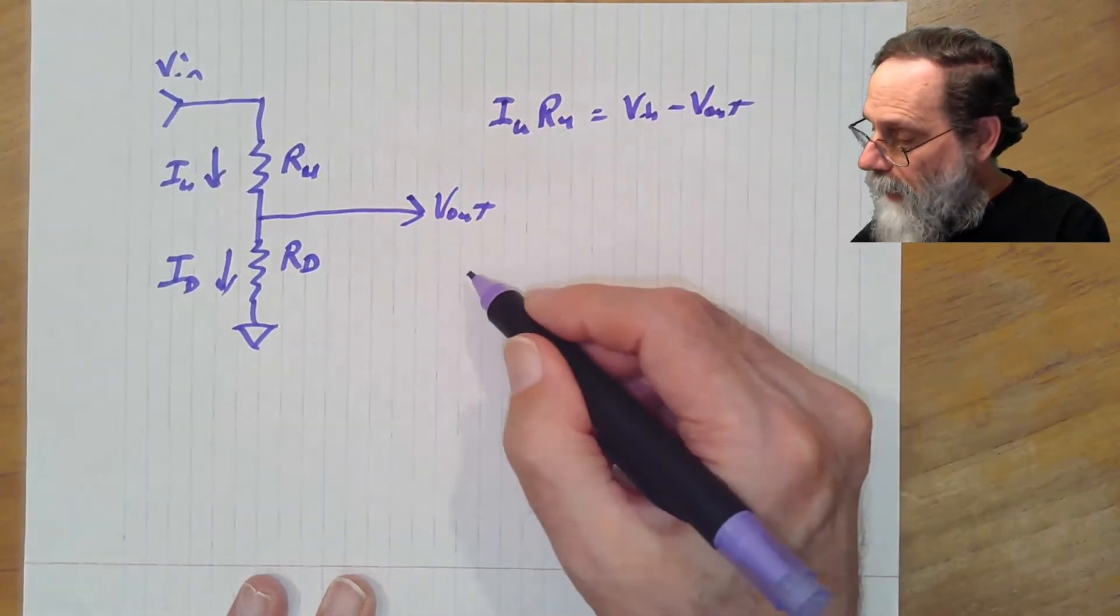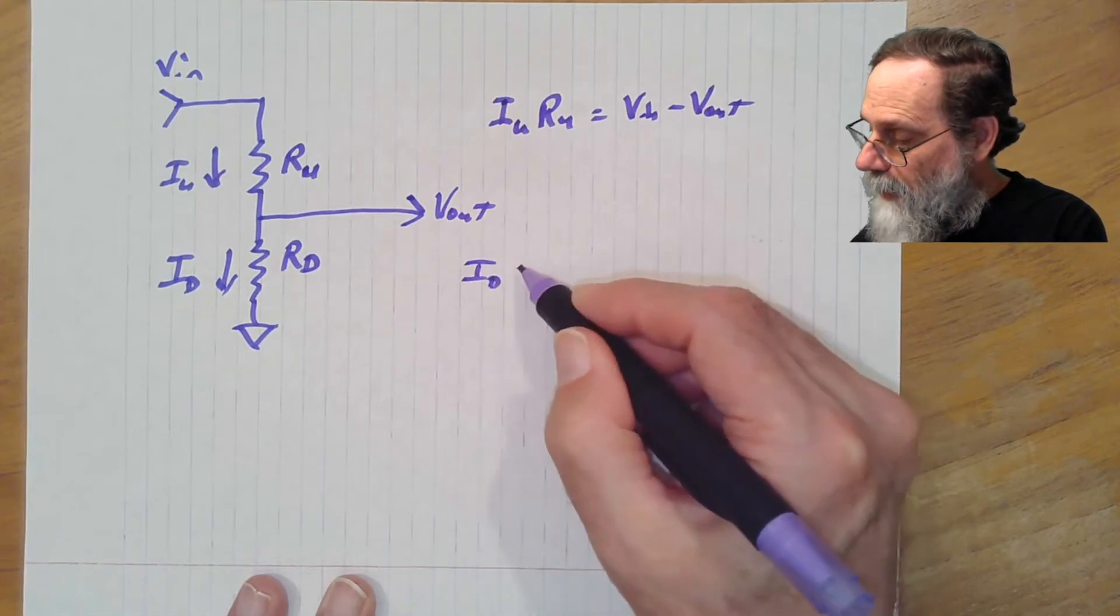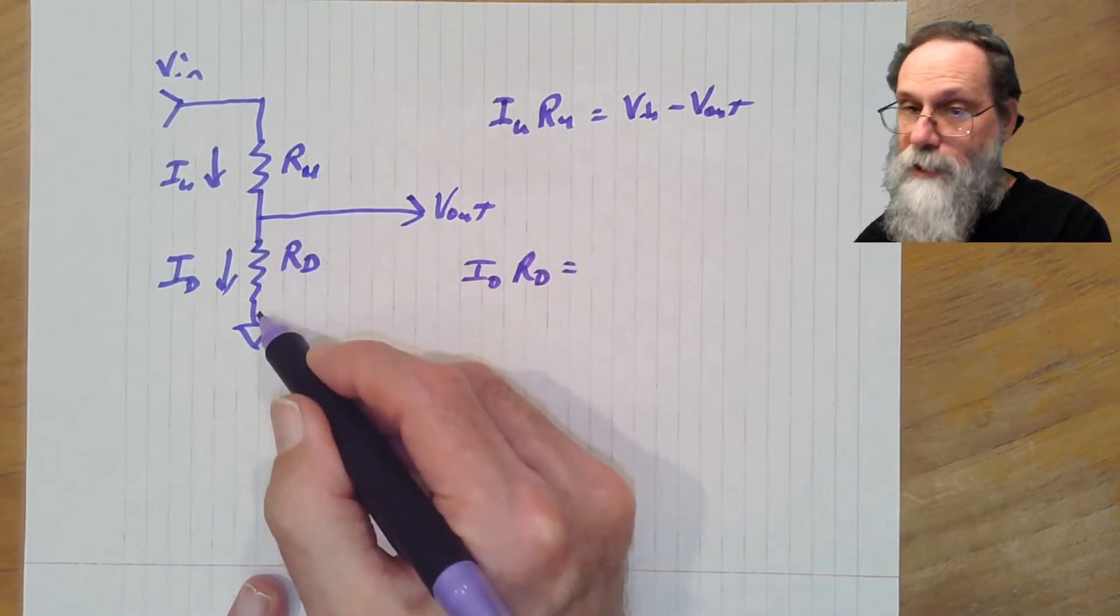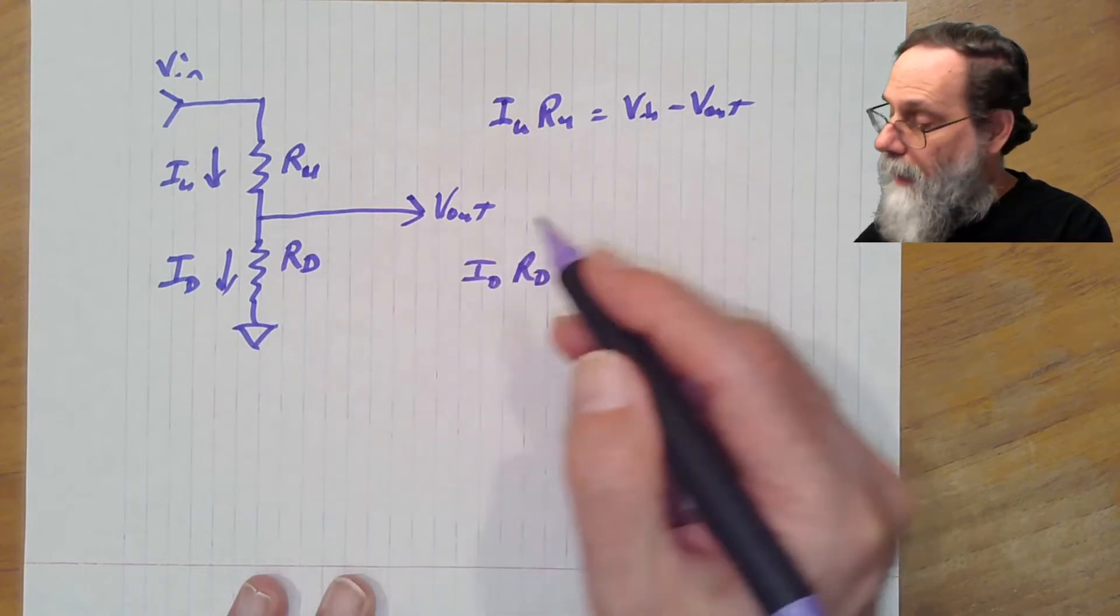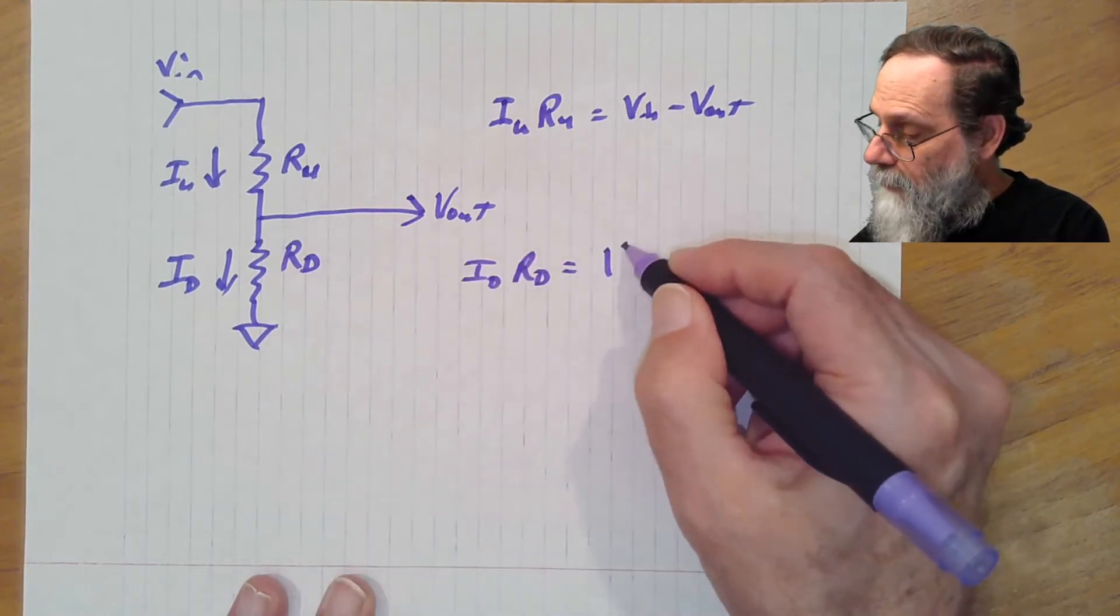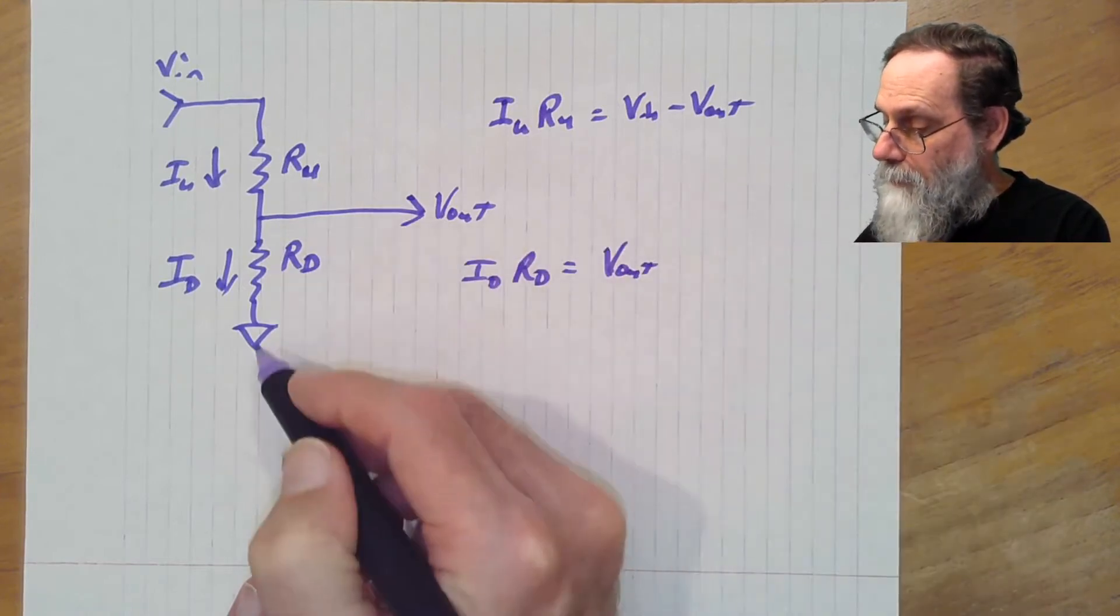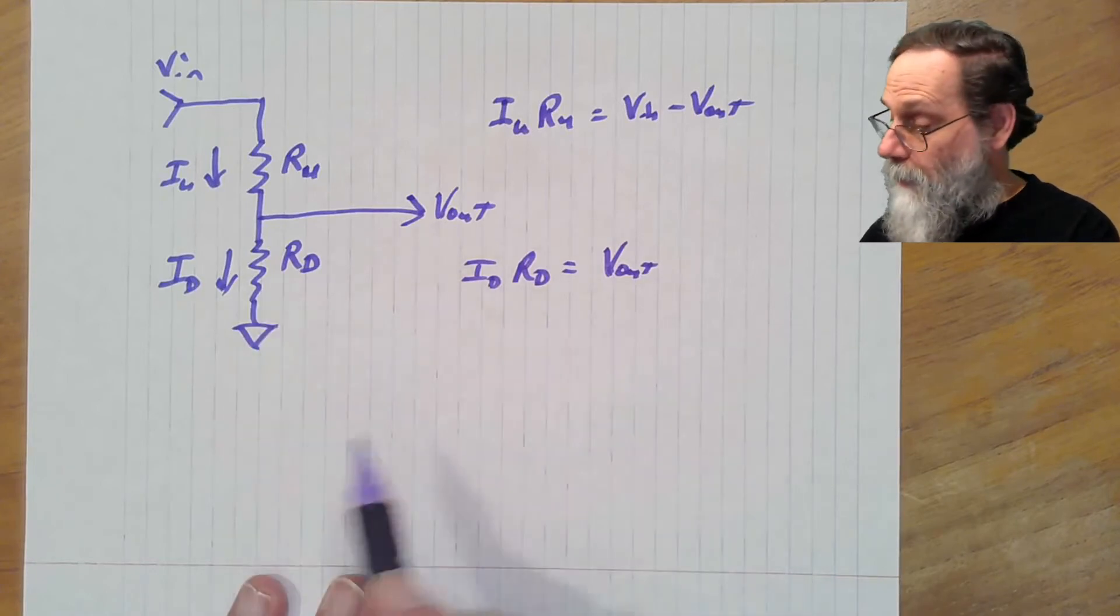And we have Id times Rd is going to be the voltage across this resistor, and so that's going to be Vout minus ground, but ground by definition is zero, so that's just Vout.